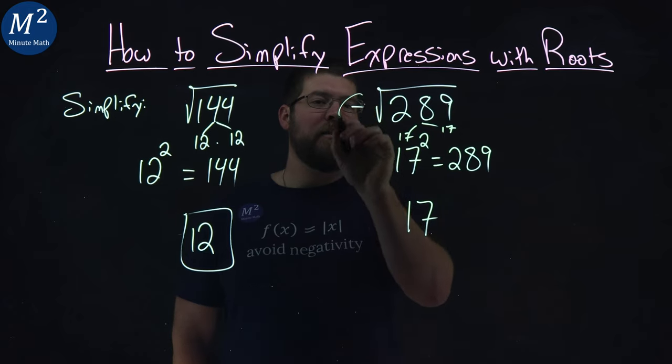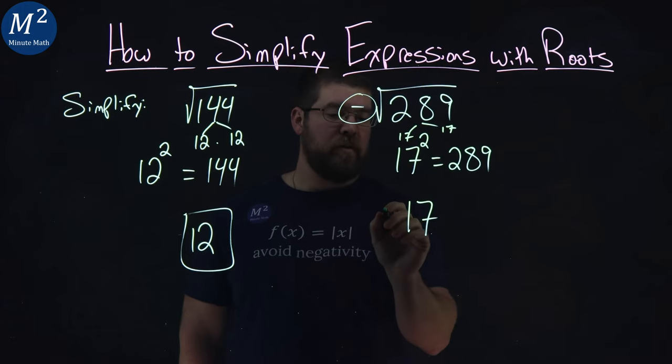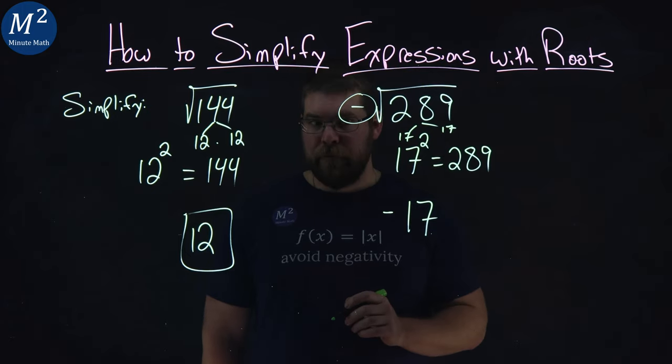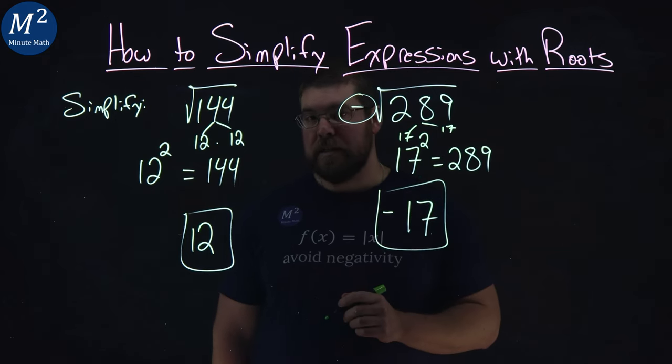But we cannot forget that negative sign. The negative sign is outside of the square root, so we have to keep it there. So the negative times the square root of 289 is just negative 17.